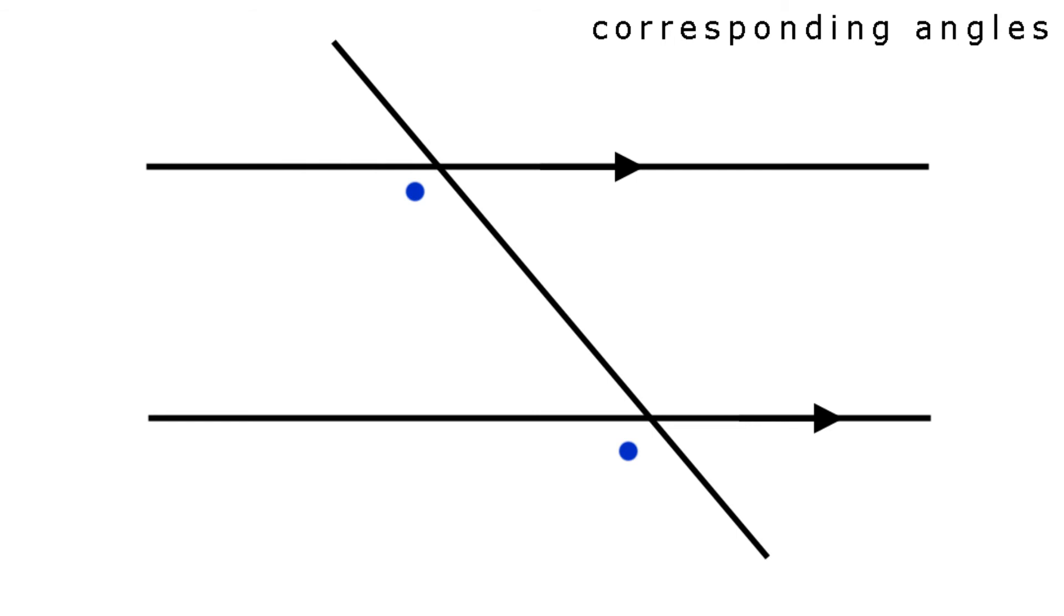Now let's look at alternate interior angles. These are pairs of equal angles appearing inside the parallel lines, on different sides of the transversal. Only one more angle type to go, so hang on.